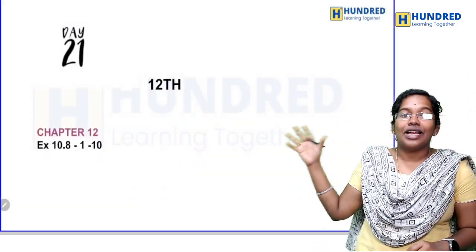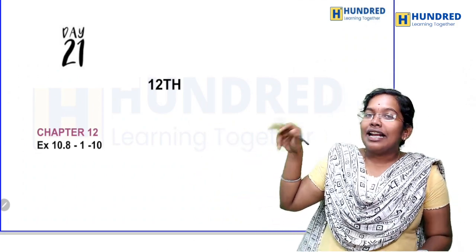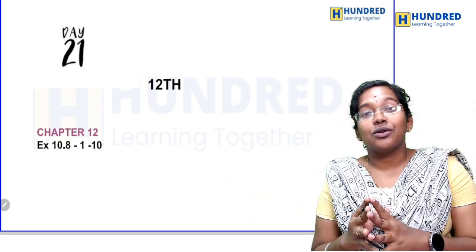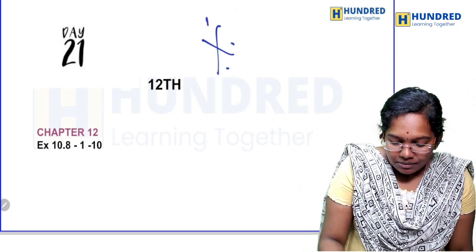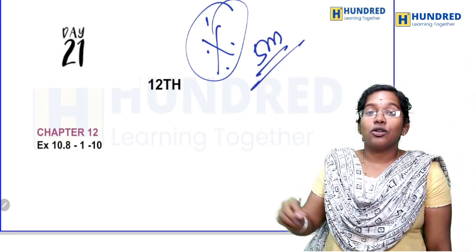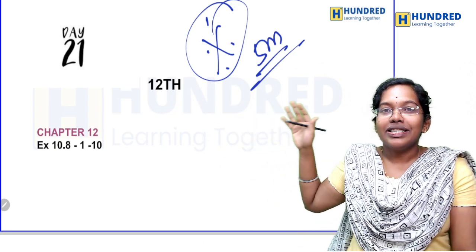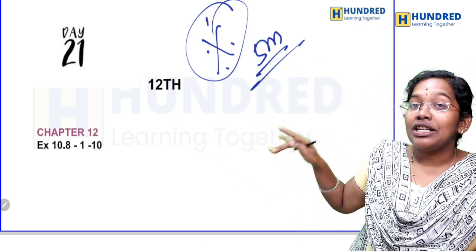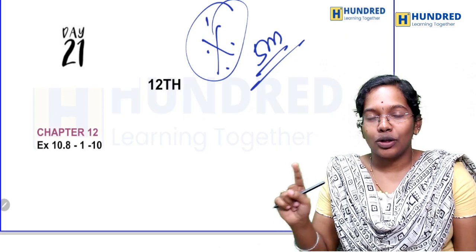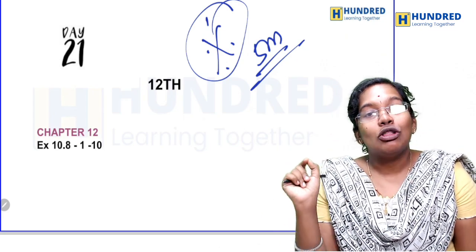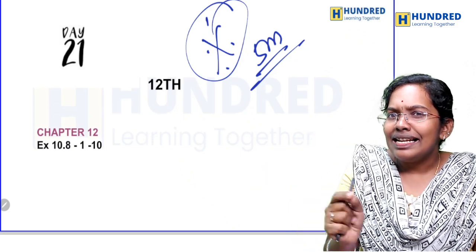For 12th standard students: exercise 10.8 — the applications-oriented sums from this exercise are from 10.8. This is must, must important. There are 5 more questions and one more exercise — very important exercise. You spend 1 hour for 5 marks, so you guys focus on the 5-mark questions here.